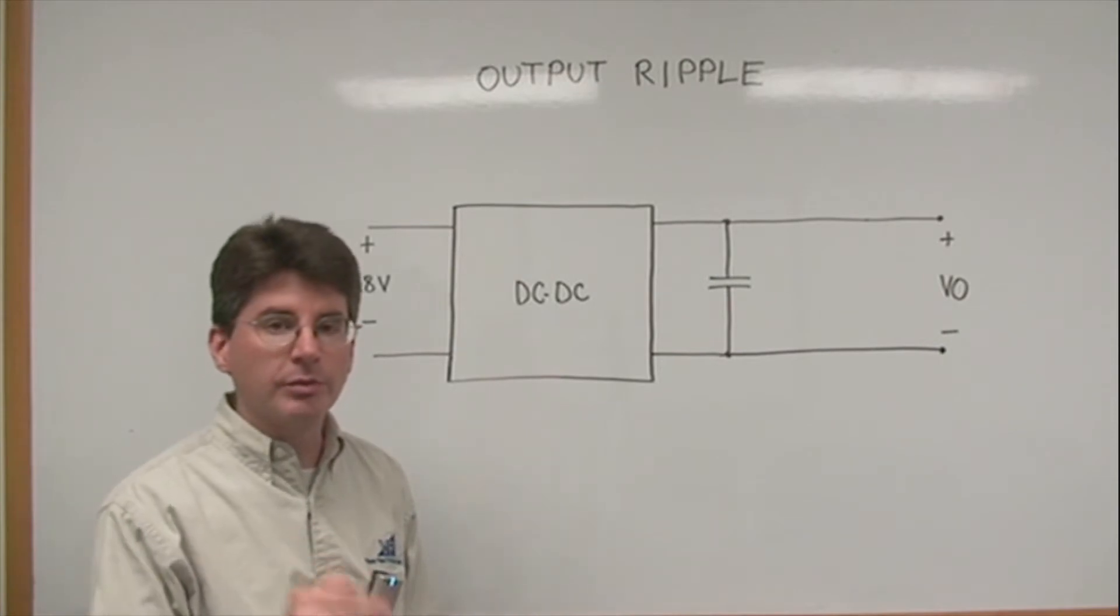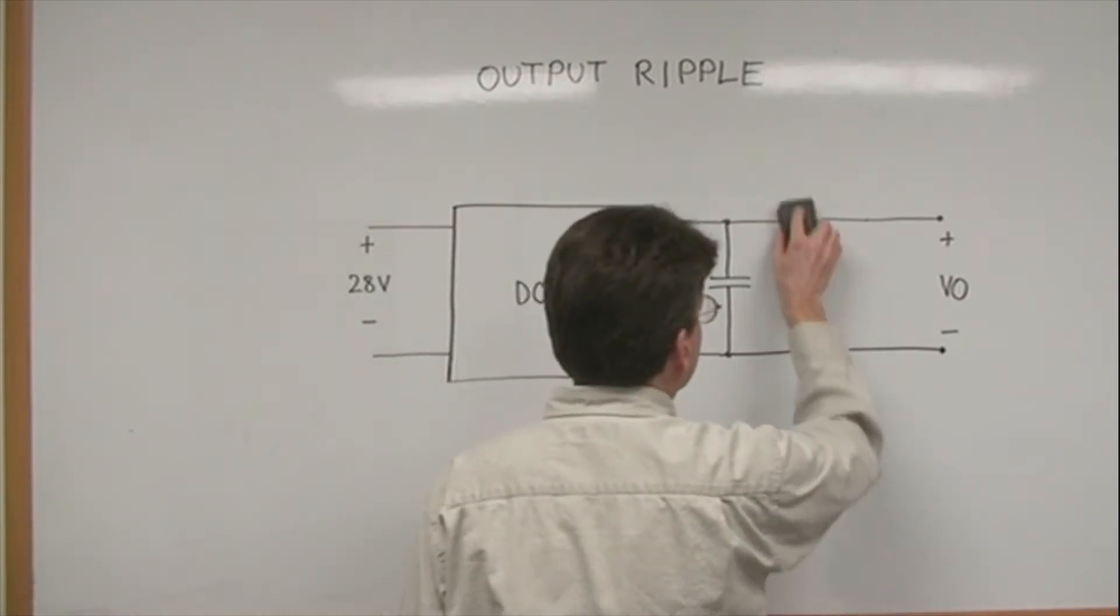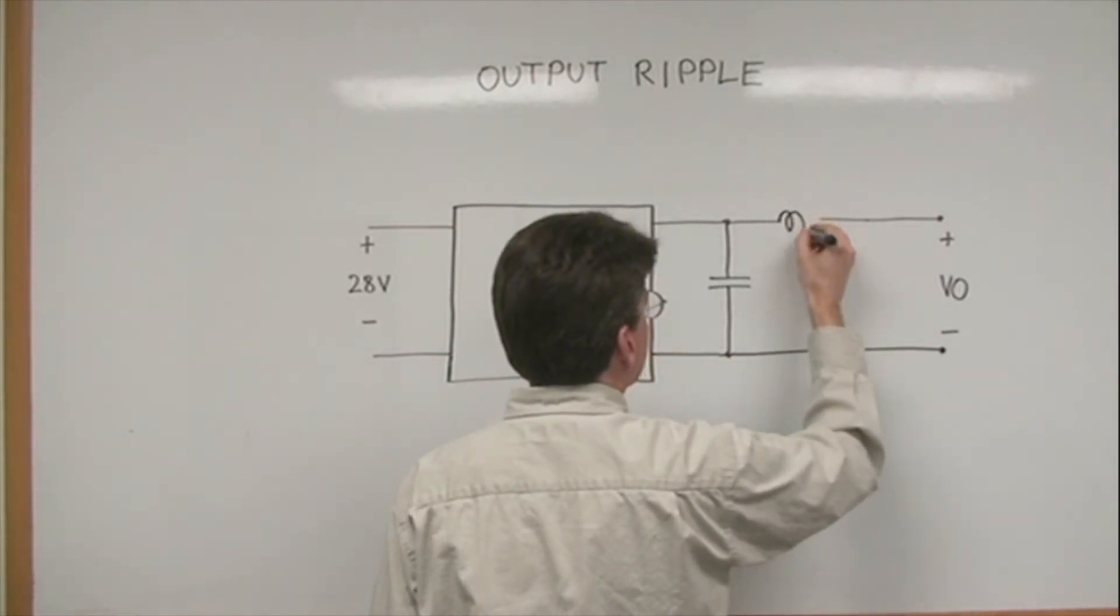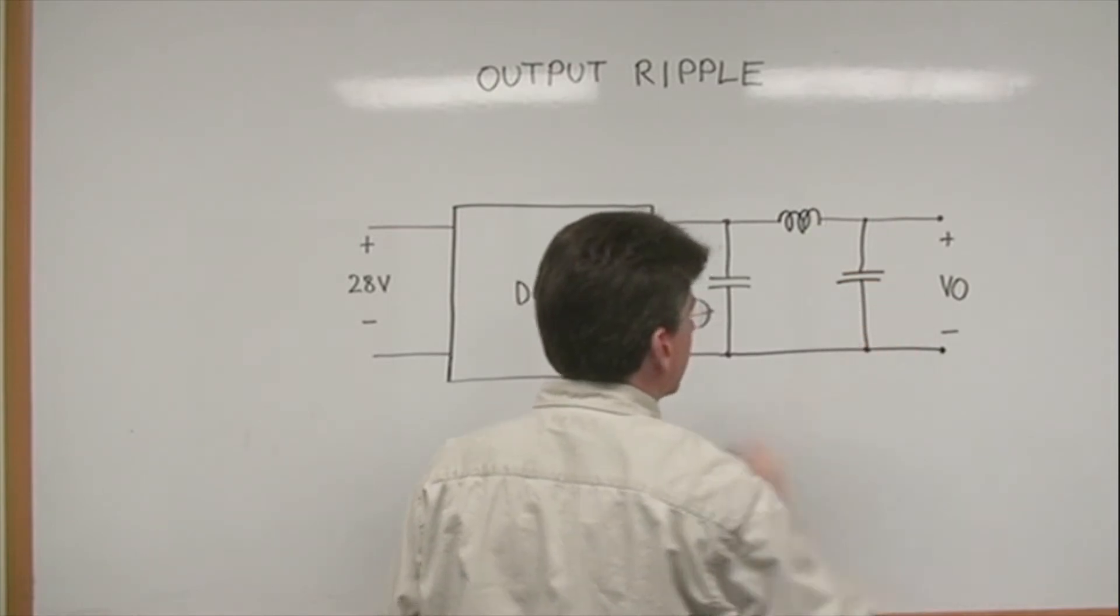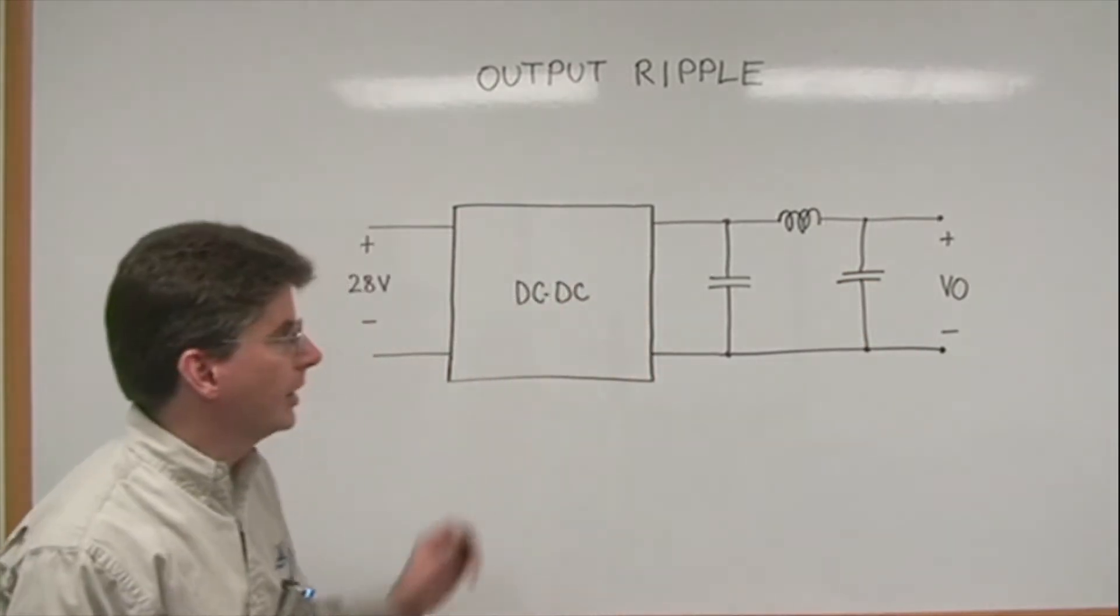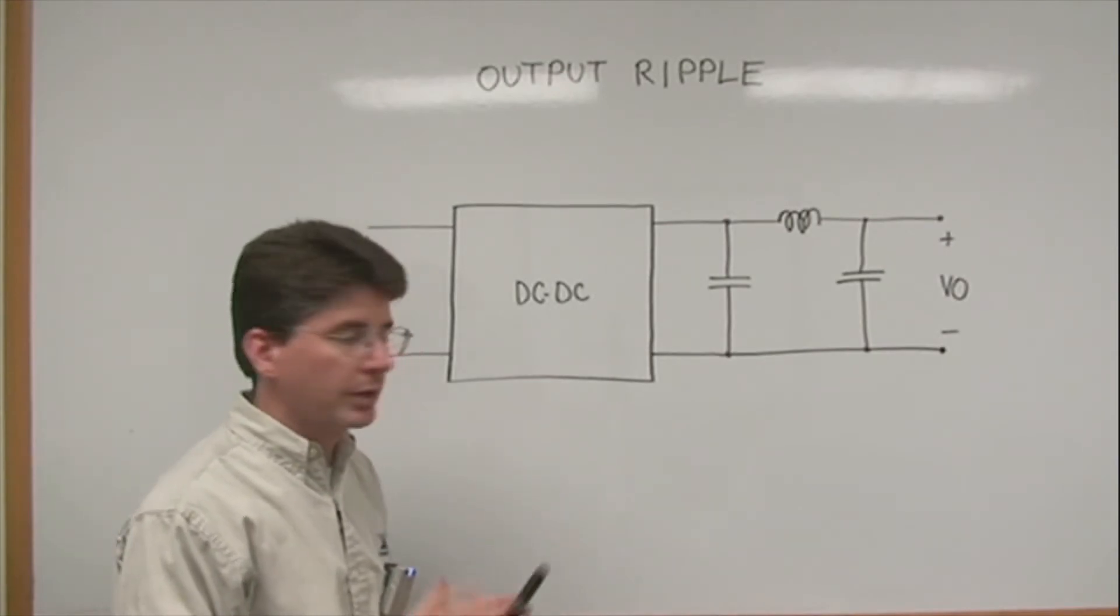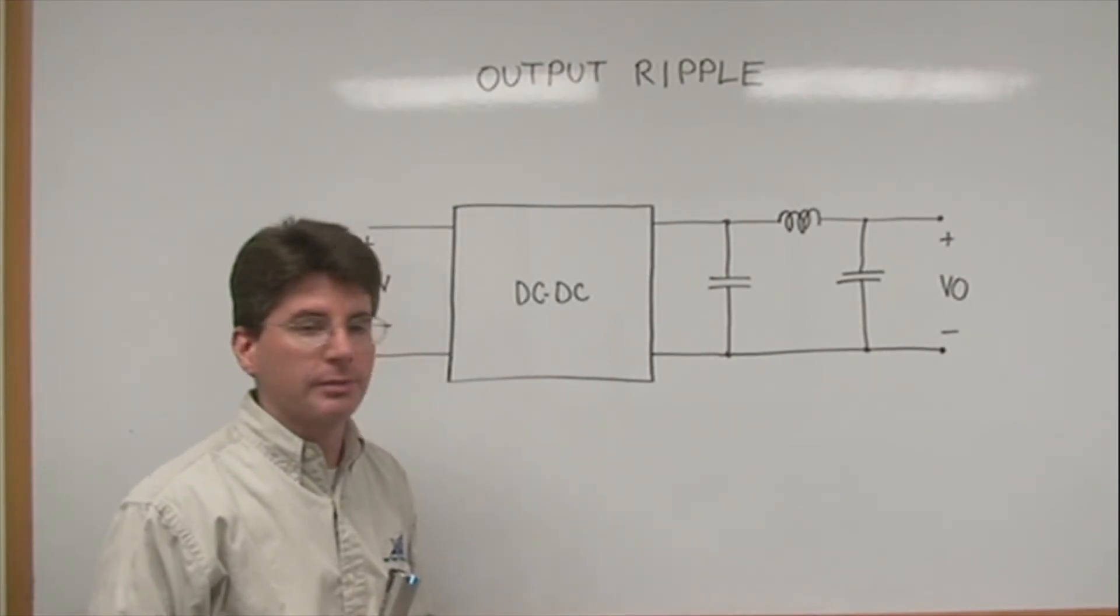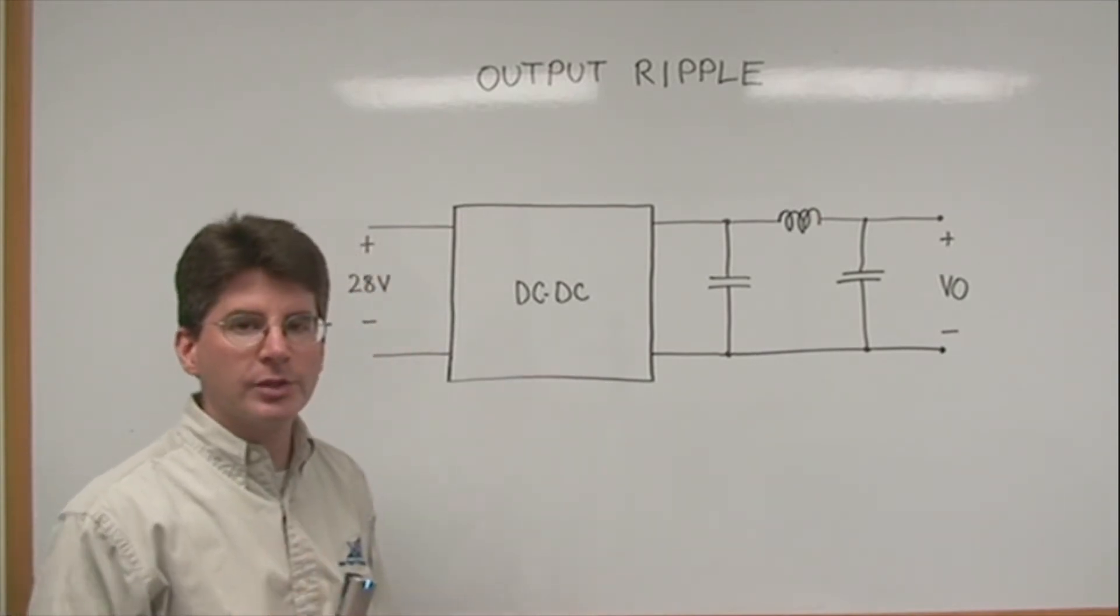For super sensitive applications where you need ripple even lower than that, you might add an LC filter. So that includes an inductor and a second capacitor. This adds an extra roll-off in the output, so it can give you lower output ripple noise.